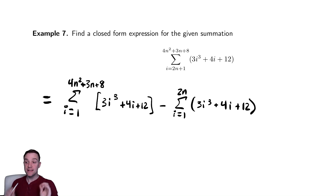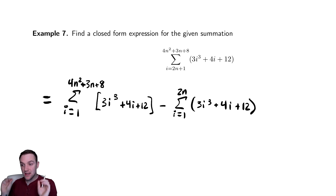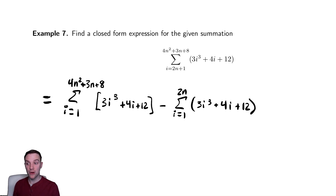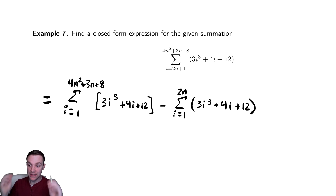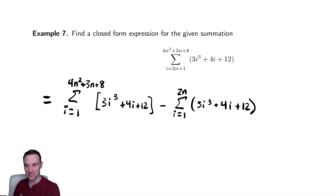This is the last property we mentioned in our useful properties video. We can split a summation that does not start at 1 into two different summations that do both start at 1. So now we just use linearity and our known formulas, as we have done in the past, to analyze this summation.